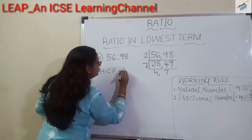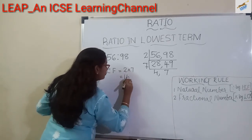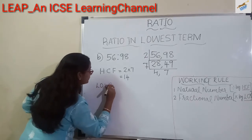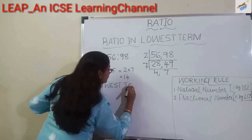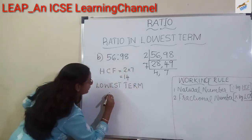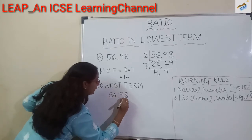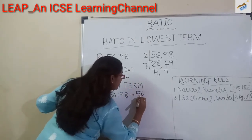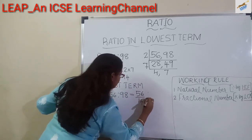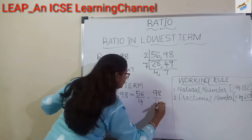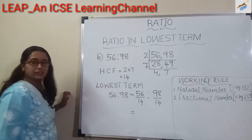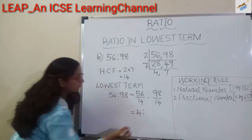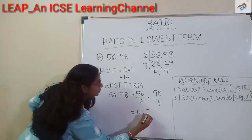HCF is equal to 2 times 7, which is equal to 14. So for the lowest term of 56 is to 98, we divide each term by 14. 56 divided by 14 is to 98 divided by 14. 14 times 4 is 56, so that gives us 4. And 98 divided by 14 gives us 7. So the answer is 4 is to 7.